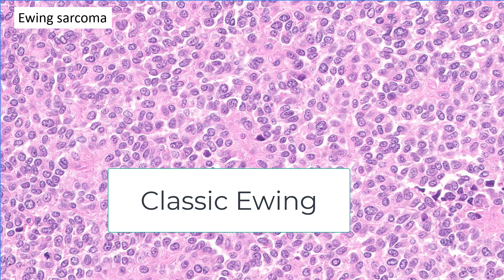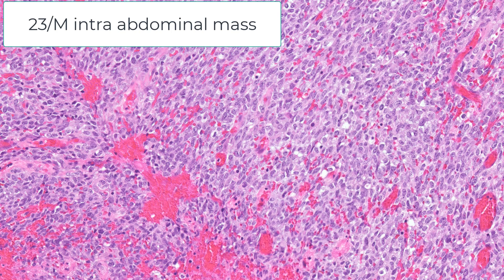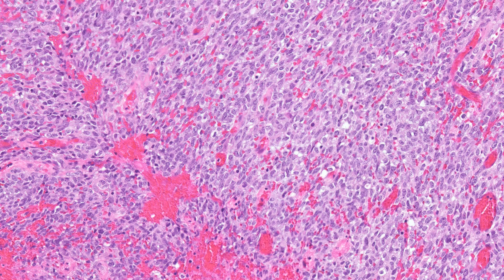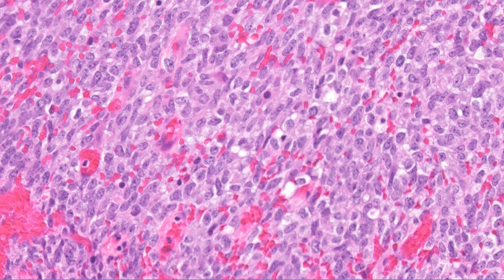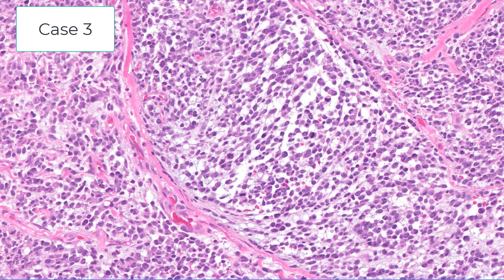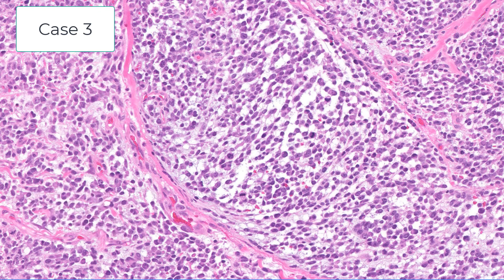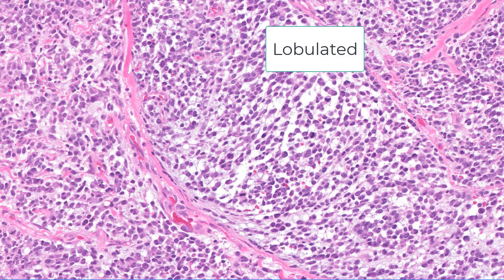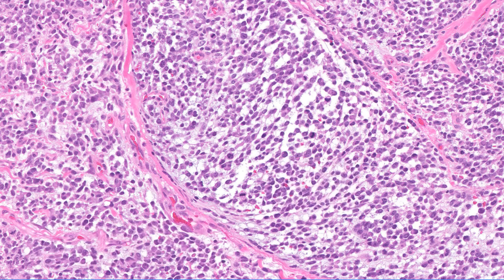By comparison, here is classic Ewing's. The next case was a 23-year-old male with an intra-abdominal mass — the cells are fairly spindled with vesicular nuclei and little prominent nucleoli. A third case has a slightly myxoid character with plasma cytoid-appearing cells in a lobulated pattern. All three of these cases are CIC-rearranged sarcomas, which tend to have atypical morphology and a rather lobulated phenotype with a bubbly myxoid background and oval cells with little prominent nucleoli.